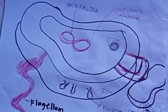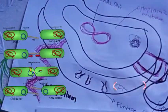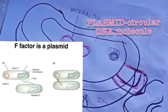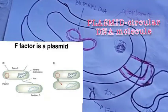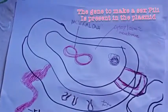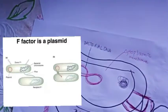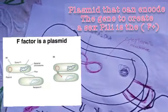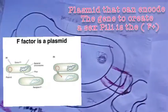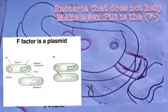Bacteria use sex pili to connect to other bacteria and exchange plasmids. Plasmids are circular DNA molecules present inside the bacteria, allowing genetic material to transfer from one bacterium to another. The gene to make a sex pili is present on the plasmid. Bacteria that have a plasmid encoding the sex pili gene are called F-positive bacteria, while those without are called F-negative.